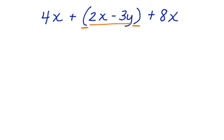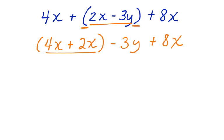So I'm going to move the parentheses, and moving the parentheses won't change my answer. Here, watch, 4x plus 2x minus 3y plus 8x. Now I can combine like terms. 4x plus 2x gives me 6x minus 3y plus 8x. So in this first part, I've used the associative property.